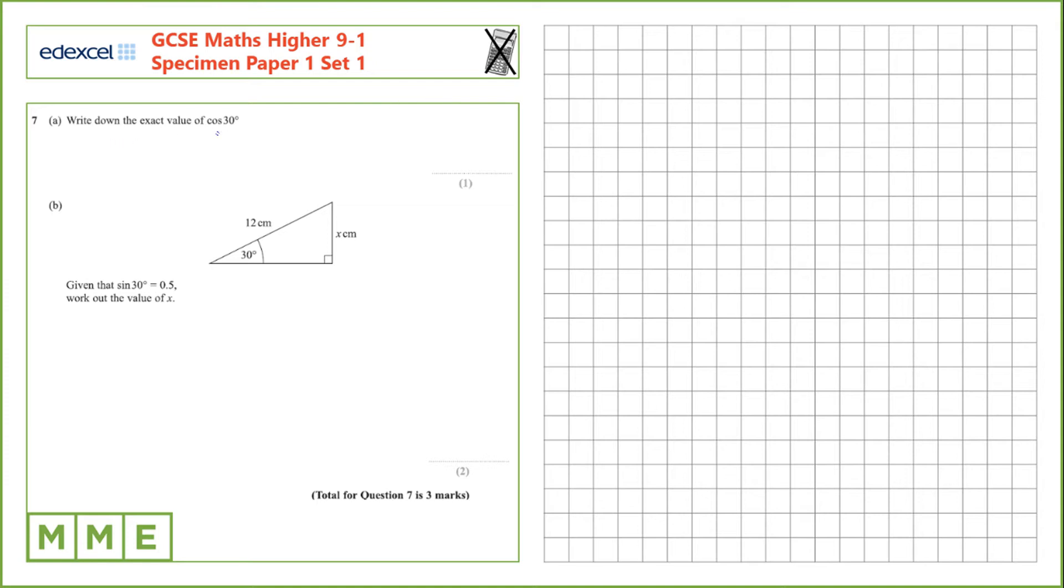Question 7a. Write down the exact value of cos 30. The exact value of cos 30 is root 3 over 2. We have to leave that as its square root because that is exact.